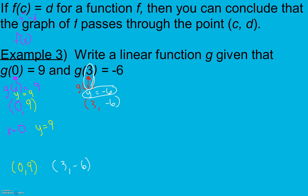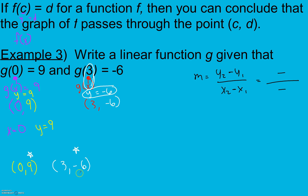Just like we've been doing since section 8.4, we can find our slope from any two points. Our framework is y2 minus y1 over x2 minus x1 — our change in y's over our change in x's. I'm going to pick negative 6 first: negative 6 minus 9 for my two y's. Since I did negative 6 first, I use 3 first: 3 minus 0. In my numerator I get negative 15, in my denominator I get 3. Dividing both by 3, I get a slope of negative 5.